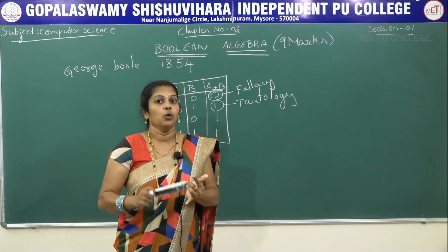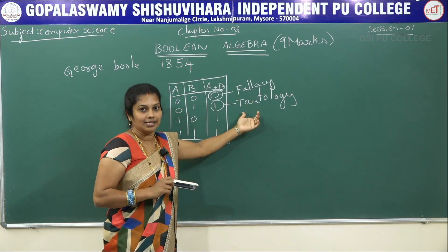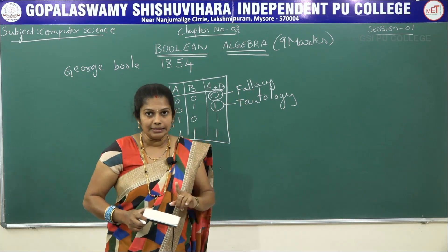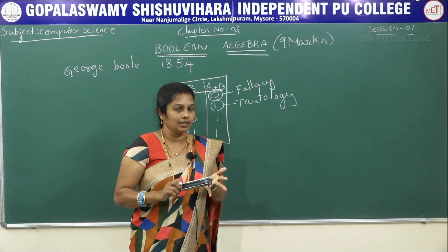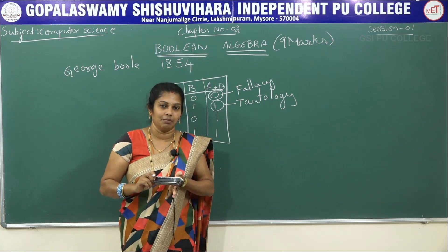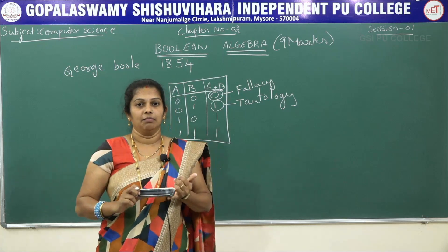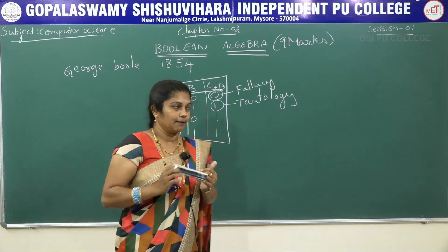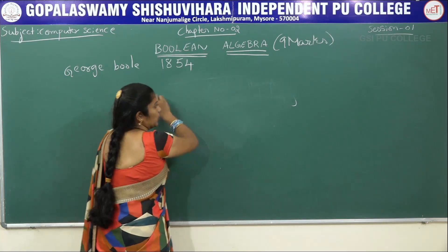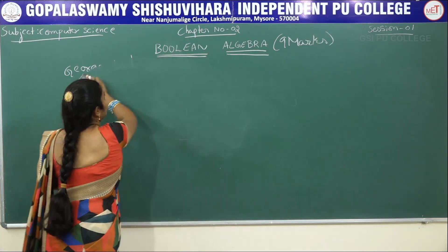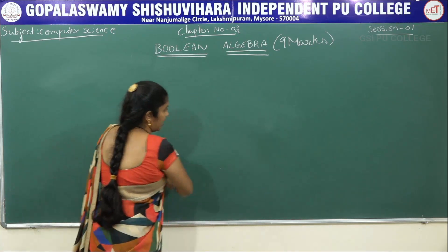In this chapter you need to remember who developed Boolean algebra, in which year, and what tautology and fallacy mean. Boolean algebra mainly deals with binary numbers — not octal, hexadecimal, or decimal. Binary numbers means 0 and 1. Now I am going to explain which logical operators we have and how to write Venn diagrams as well as truth tables.